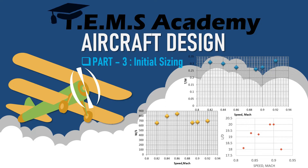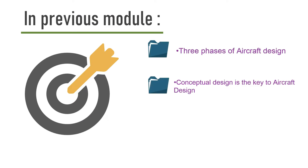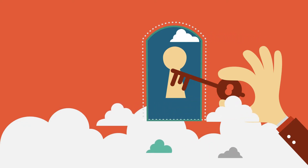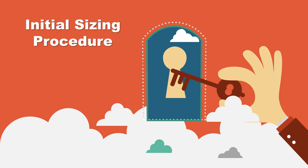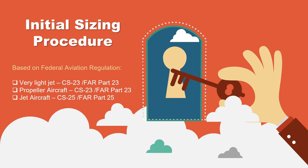As discussed in the previous lecture, there are three phases of aircraft design, the first being conceptual design. For initial sizing, certain processes proposed by Lofting in 1980 are followed. These must be certified under FAR regulations — FAR Part 23 for very lightweight, propeller, and very light jet aircraft, and FAR Part 25 for jet aircraft.